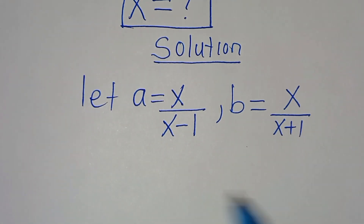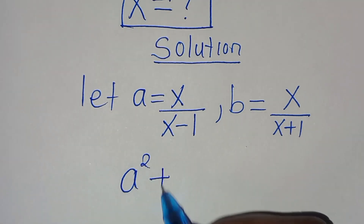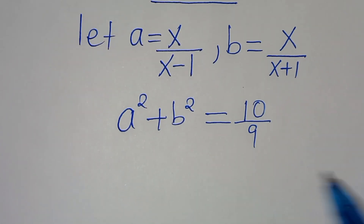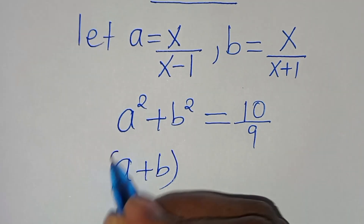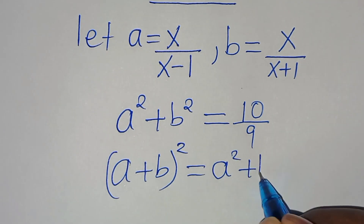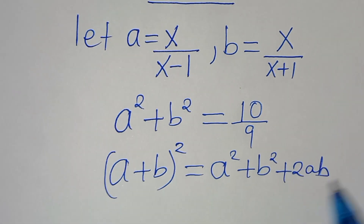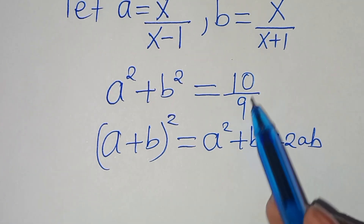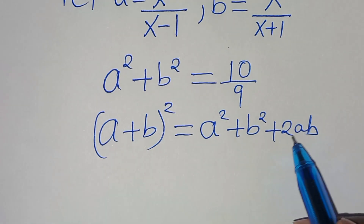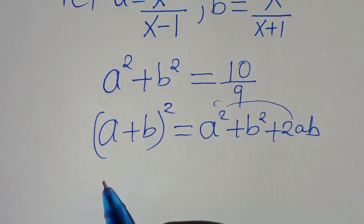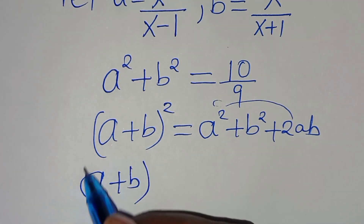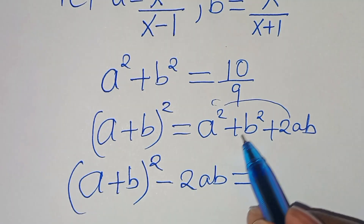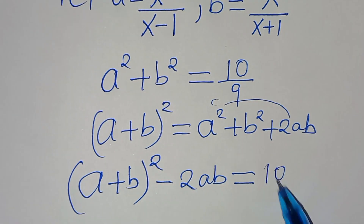So now we have a² + b² = 10/9. We know that (a+b)² = a² + b² + 2ab, which is an algebraic identity. So we can rearrange: a² + b² = (a+b)² - 2ab = 10/9.